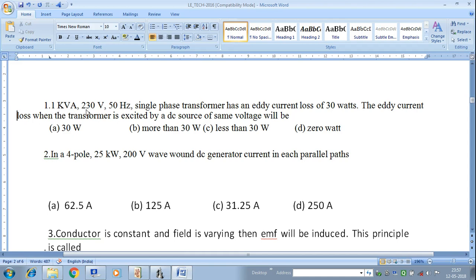1 KVA 230V 50Hz single-phase transformer has an eddy current loss of 30 watts. The eddy current loss when transformer is excited by a DC source of same voltage will be 30 watts, more than 30 watts, less than 30 watts, or zero watts.